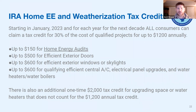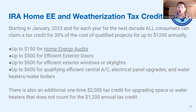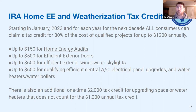Moving on to the Inflation Reduction Act — this bill was passed in August and signed by the president. All consumers, regardless of income, can claim a tax credit of up to 30% of a qualified project, up to $1,200 annually, and these credits last for the next 10 years. That's where the home energy audit really comes in — you can start mapping out expenses and plan which improvements to do each year to maximize that $1,200 tax credit annually.